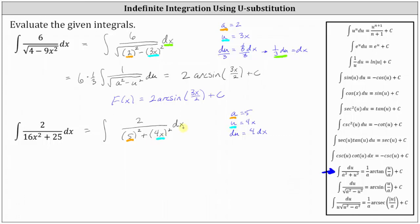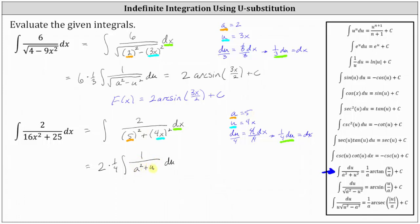Looking back at the integral, we can substitute a for five and u for four x. We're left with two dx and du equals four dx, so we can divide both sides by four to solve for dx. Simplifying, one-fourth du equals dx. Finally, we substitute one-fourth du for dx and write the integral in terms of u. We factor out the two, then dx is one-fourth du, factor out the one-fourth, and we have du. The integrand is now just one divided by a squared plus u squared, which fits the formula perfectly.